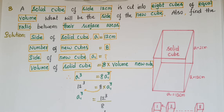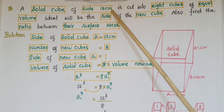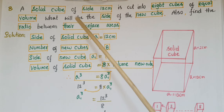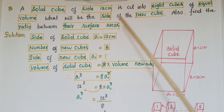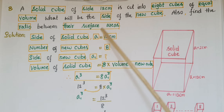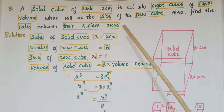Hello everyone, today I am going to tell the solution of a problem from Exercise 13.5, from Surface Areas and Volumes from NCERT Class 9. A solid cube of side 12 centimeters is cut into 8 cubes of equal volume. What will be the side of the new cube? Also find the ratio between the surface areas.